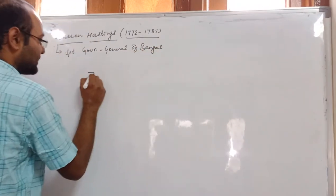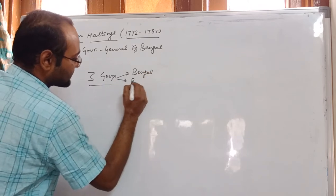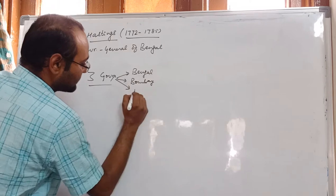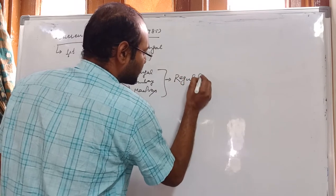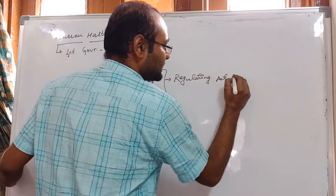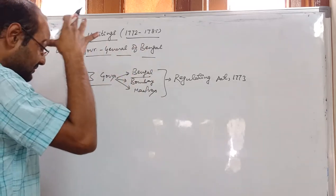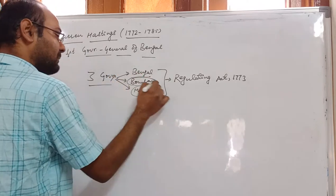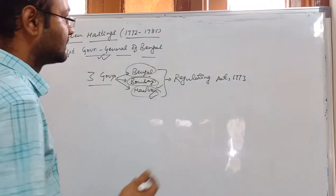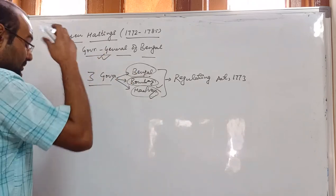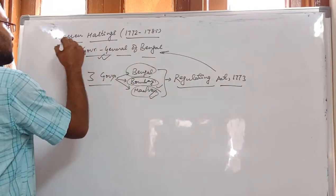Before Warren Hastings, there were three governors with equal powers — one each in Bengal, Bombay, and Madras, where the company's factories were located. However, after the Regulating Act of 1773, the Governor of Bengal was transformed into the Governor General of Bengal and given superior power over Bombay and Madras. The governors of Bombay and Madras became subordinate to him. In the prelims, do not make the mistake of confusing this provision — the Regulating Act created the post of Governor General of Bengal, and the first holder was Warren Hastings.